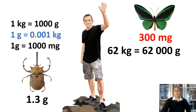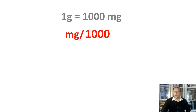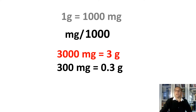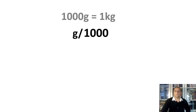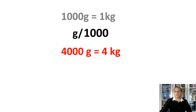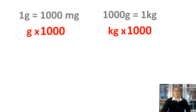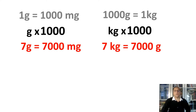Converting between units of mass is straightforward since it all works on the scale of one thousand. Knowing that one gram is 1,000 milligrams, we divide grams by 1,000 to find the value in milligrams — so 3,000 milligrams equals 3 grams, and 300 milligrams equals 0.3 grams. To convert grams into kilograms, divide by 1,000: 4,000 grams equals 4 kilograms, and 400 grams equals 0.4 kilograms. To go the other way, simply multiply.